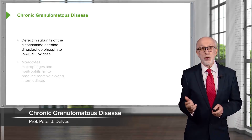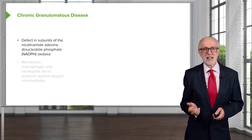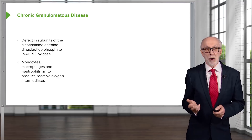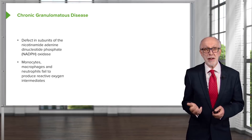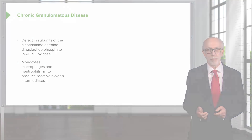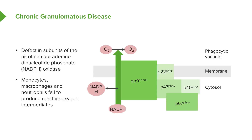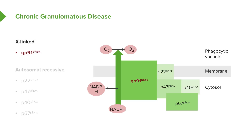Chronic granulomatous disease is in the vast majority of patients due to a defect in subunits of the NADPH oxidase — the nicotinamide adenine dinucleotide phosphate oxidase. It affects monocytes, macrophages and neutrophils, which fail to produce reactive oxygen intermediates that are required to kill engulfed microorganisms. The function of this oxidase is to produce reactive oxygen species involved in killing engulfed microorganisms.